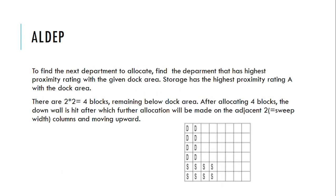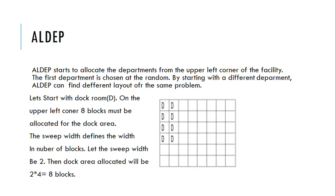To find the next department to allocate, ALDEP starts allocating departments from the upper left corner of the facility. The first department is chosen at random; by starting with different departments, ALDEP can find different layouts of the same problem. Starting with dock room D at the upper left, 8 blocks must be allocated for the dock area. With sweep width of 2, the dock area will be allocated as 2 × 4 = 8 blocks.